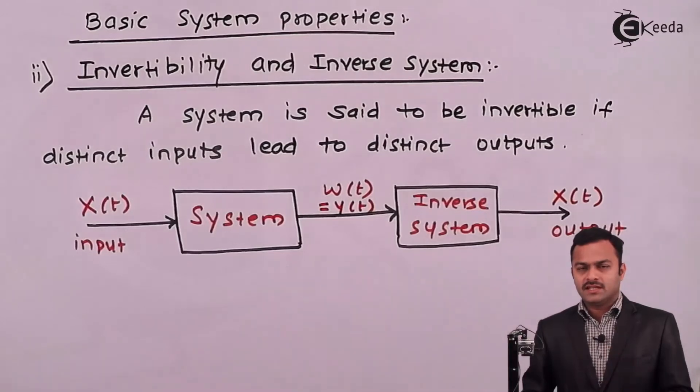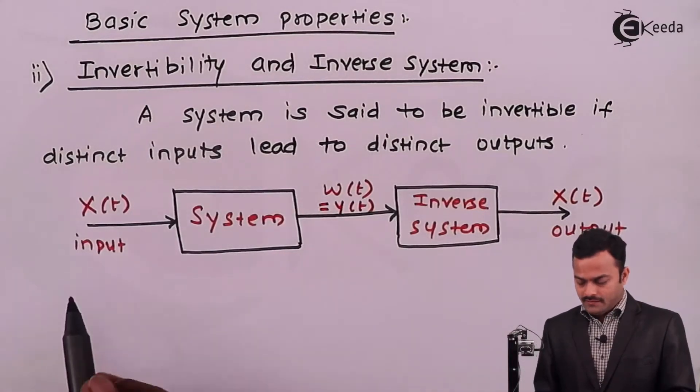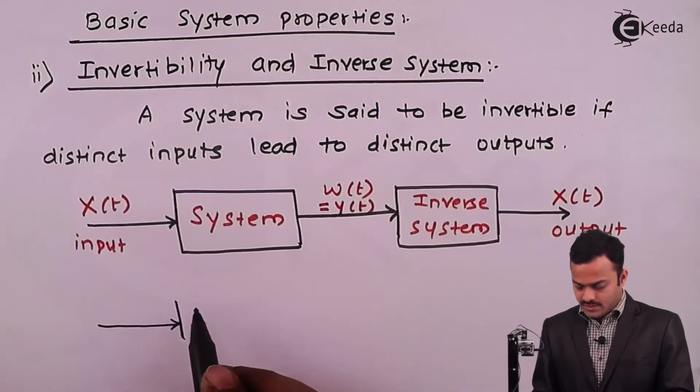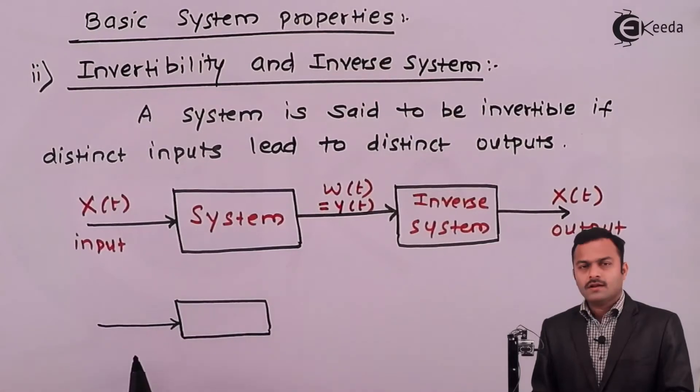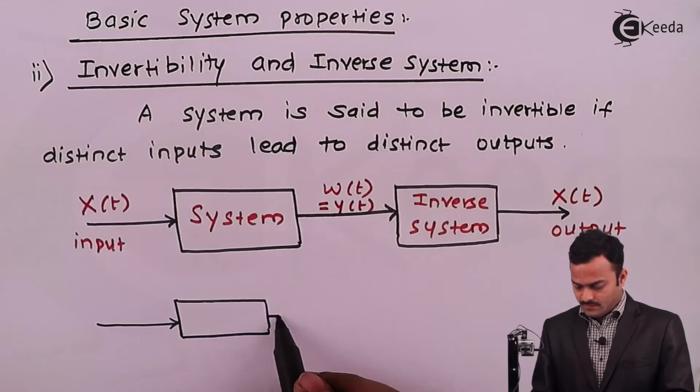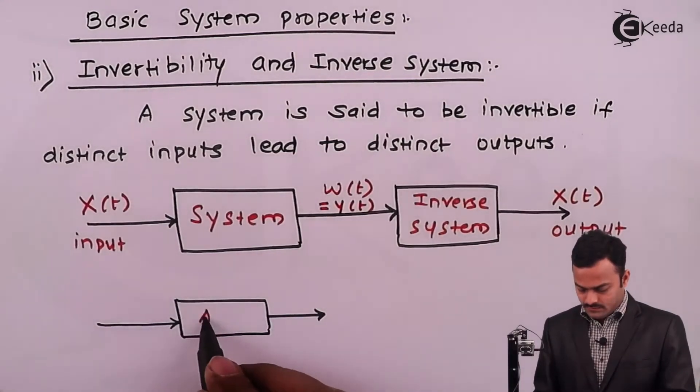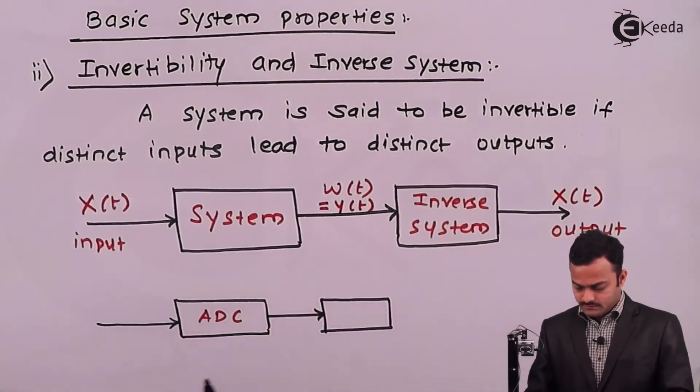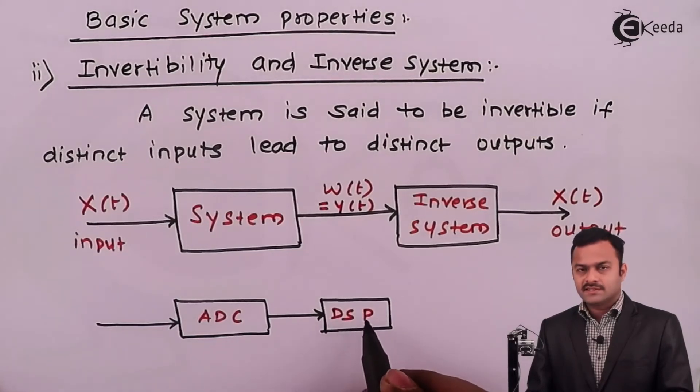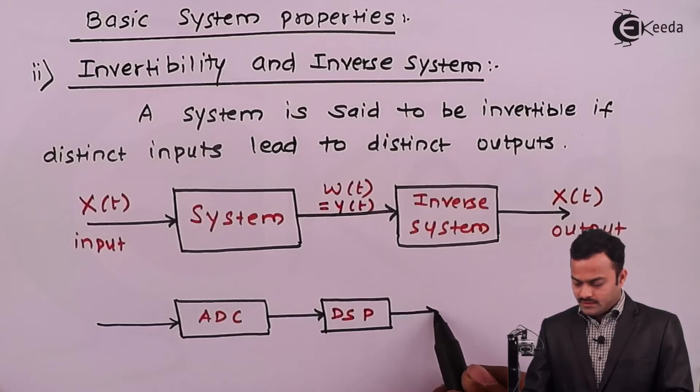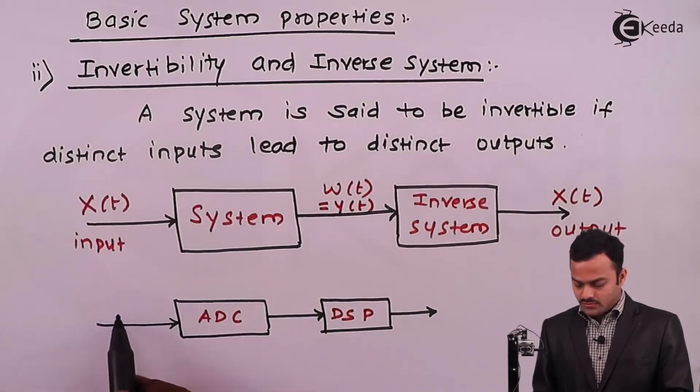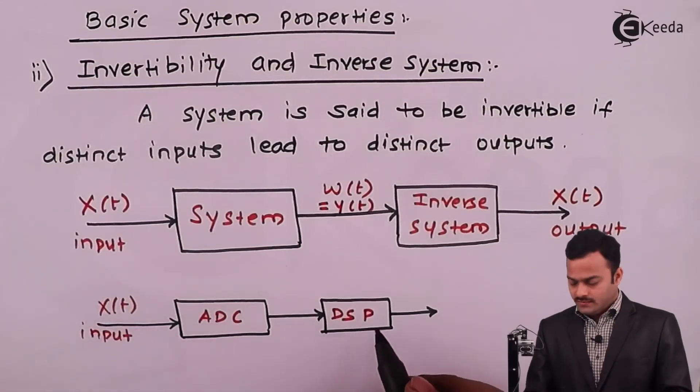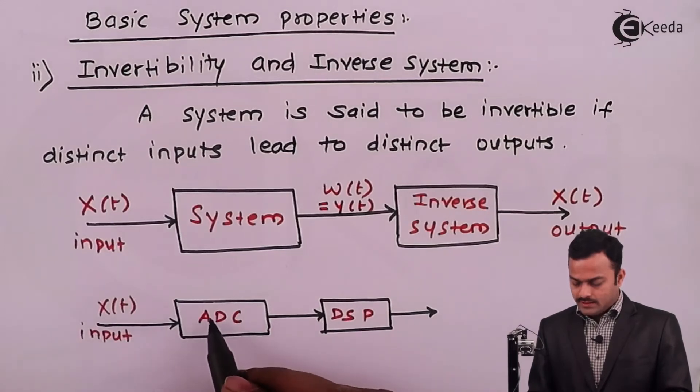So what happens sometimes we have one particular signal. Let's take an example where I am having a signal which is continuous time, and that is passed through an ADC converter so that it will be converted into digital, and that we passed through some digital signal processor. But because I need to use a DSP for better efficiency and accuracy, I convert that into digital signal through this block.